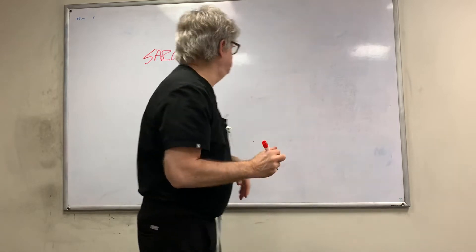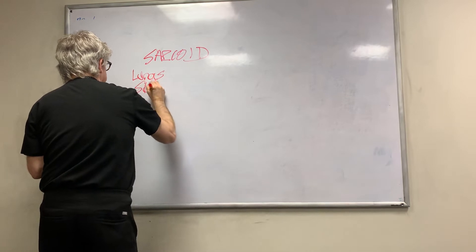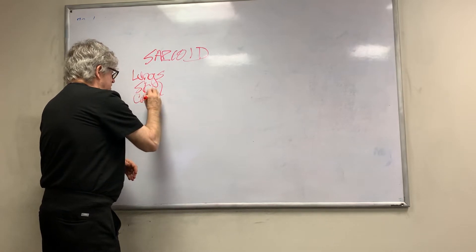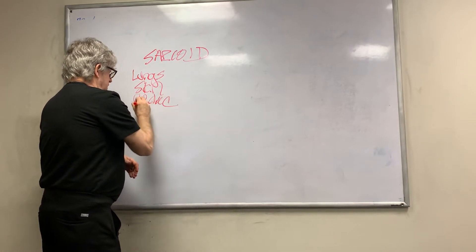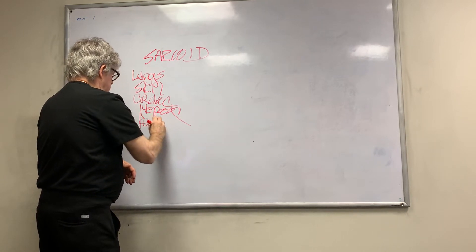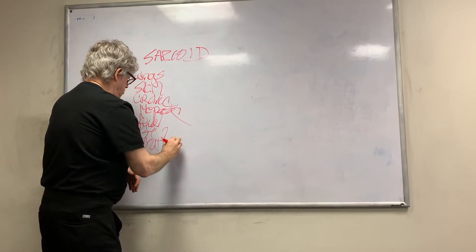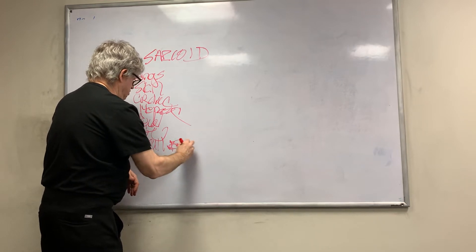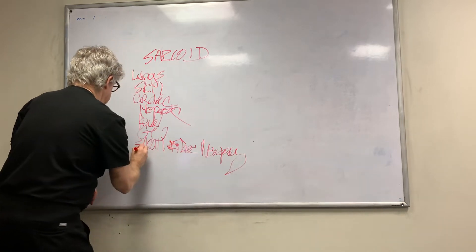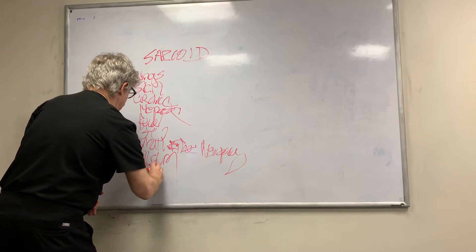The most common system affected is the lungs, the second most common is the skin, but other systems could also be involved: cardiac, hepatic, renal, GU. You can also get small fiber neuropathy, hypercalcemia, and involvement of the musculoskeletal system.